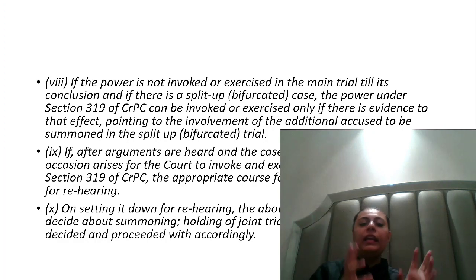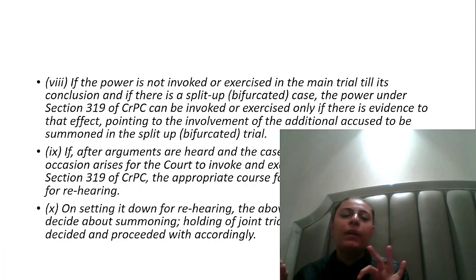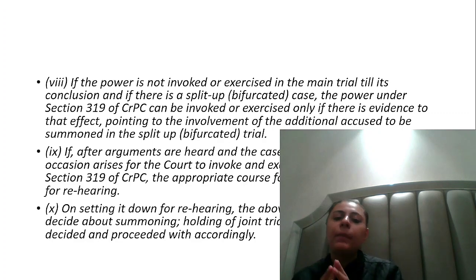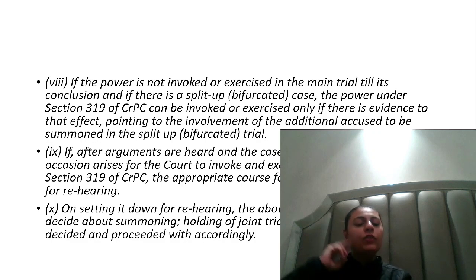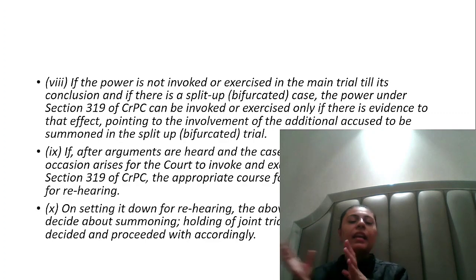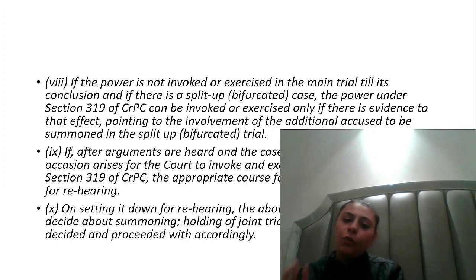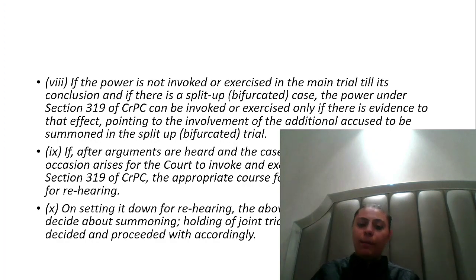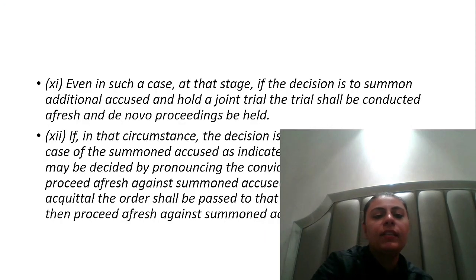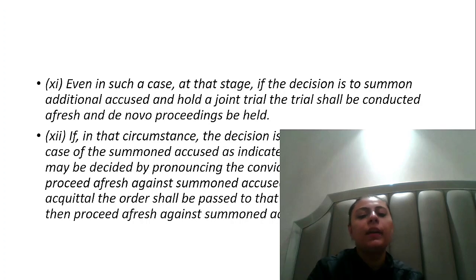In conclusion, the court says that at any stage this power can be exercised, but only after taking evidence. The court must apply its judicial mind — separately or jointly — and until the trial decision is made, it will be paused. When the court has decided, if the new accused is to be tried separately, the second trial will proceed. If the court says jointly, then the trial will start again from the beginning.